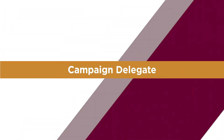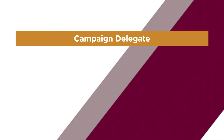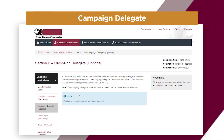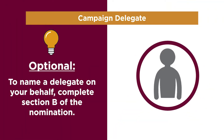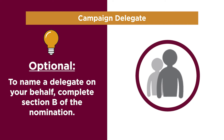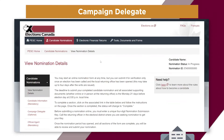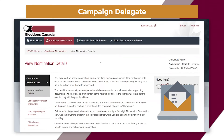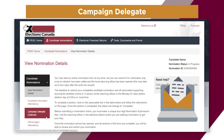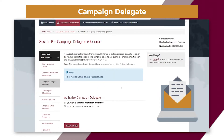Once you have created the nomination, you can name a campaign delegate to complete the rest of the process on your behalf. To do this, you must complete the campaign delegate section of the nomination. An email will automatically be sent to your delegate with instructions on how to create and/or log in to a PESC account.